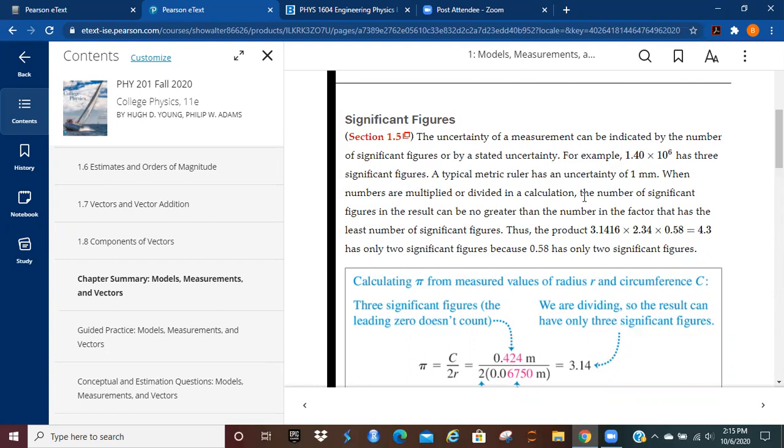A typical metric ruler has an uncertainty of 1 millimeter. When numbers are multiplied or divided in a calculation, the number of significant figures in the result can be no greater than the number in the factor that has the least number of significant figures. So here you have one factor that has five significant figures in it. Here you have another factor that has three. And then here you have another factor that has two. This one doesn't count. If you multiply all of those together, your final answer here is only going to have two significant figures in it because this is the term that limits that number.